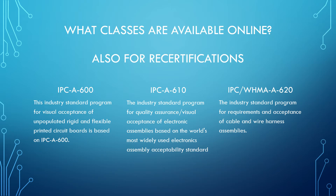IPC A610 covers quality assurance and acceptance criteria, and IPC WHMA A620 for acceptance of cable and wire harness assemblies for quality assurance. These are also all available for recertifications remotely online.